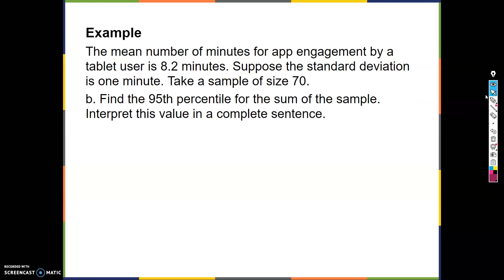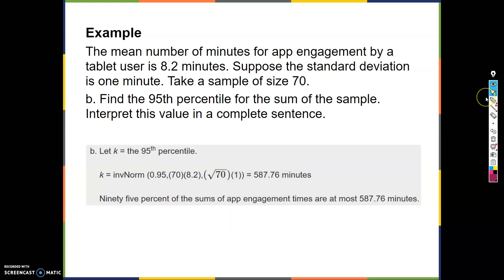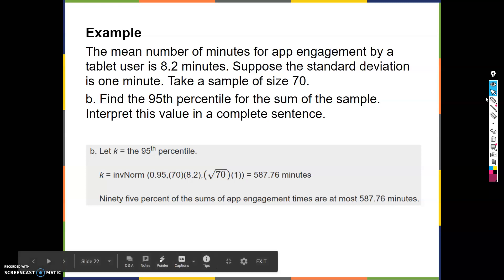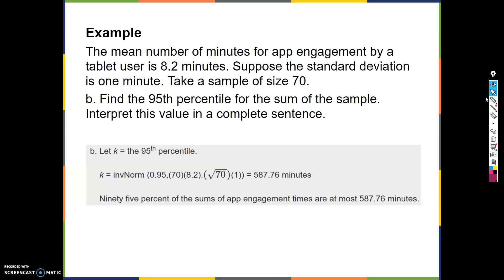Part b: find the 95th percentile. Use inverse normal with 0.95, new mean of n times old mean, and new standard deviation of square root of n times old standard deviation, which is 1. Throw all this into inverse normal and get 587.76. The key point is that your new mean goes to n times the old mean and your new standard deviation goes to square root of n times the old standard deviation.